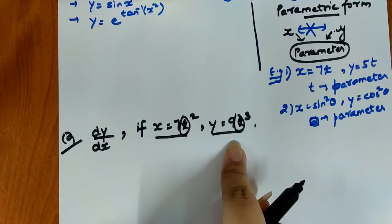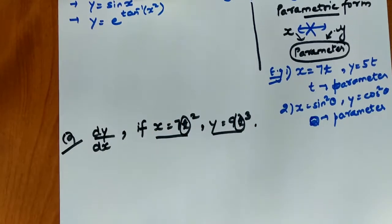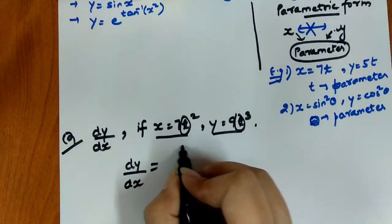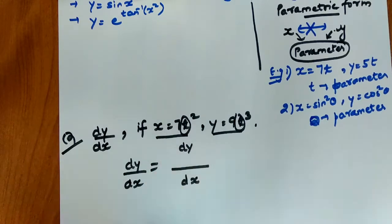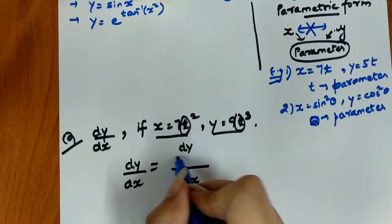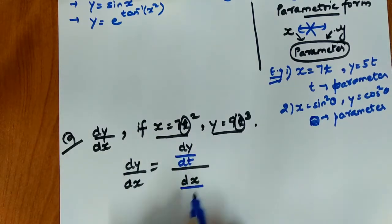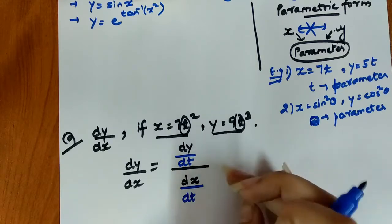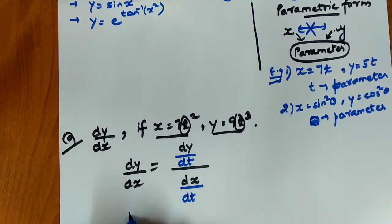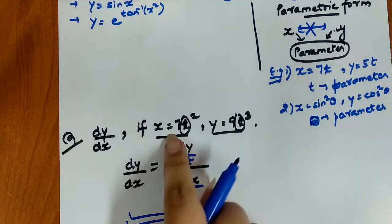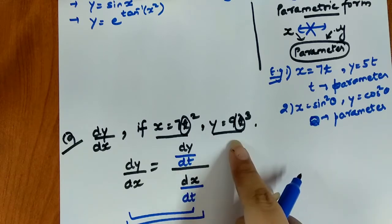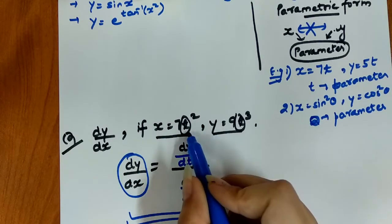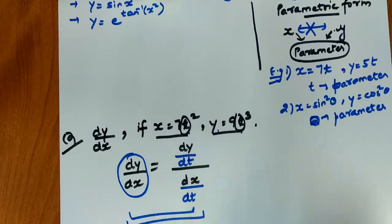Even though x and y are not directly connected, there is no change in what we need to find — we still remove the derivative dy/dx. What we do is differentiate both x and y with respect to the parameter, and then divide them so that we get dy/dx. The formula is: dy/dx = (dy/dt) ÷ (dx/dt).